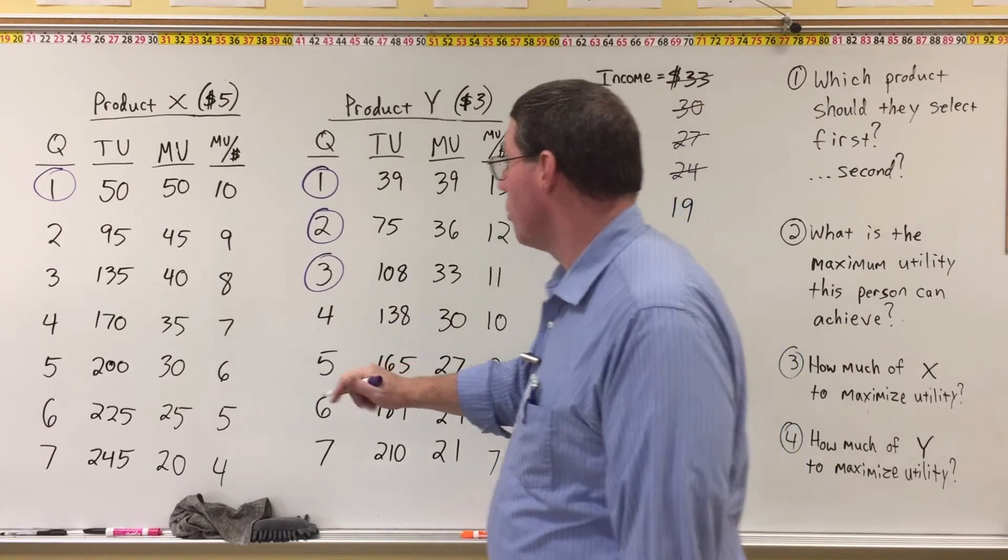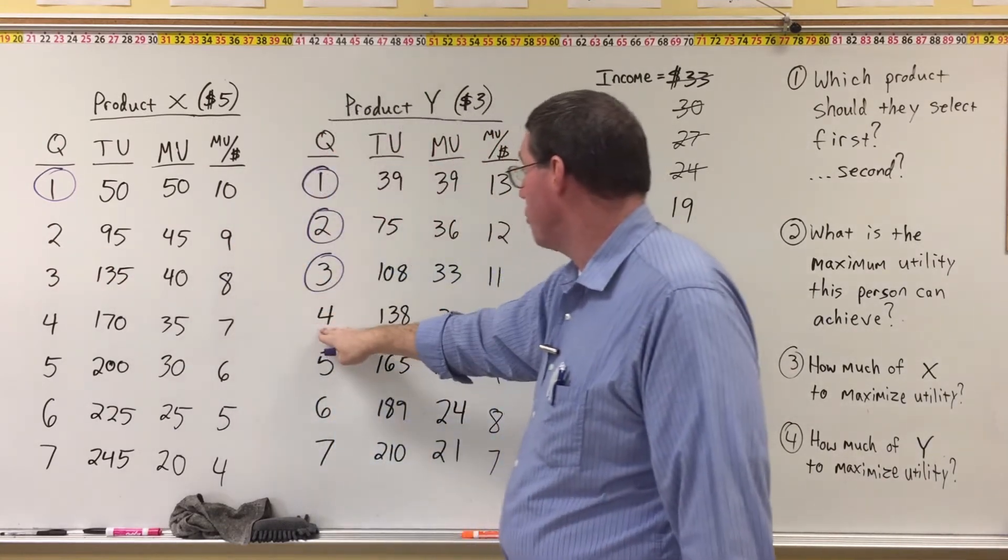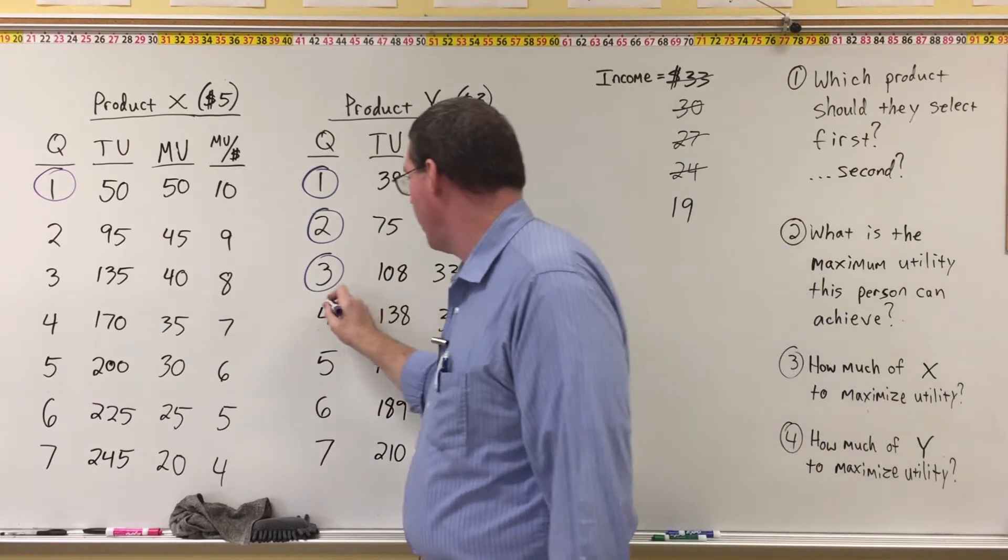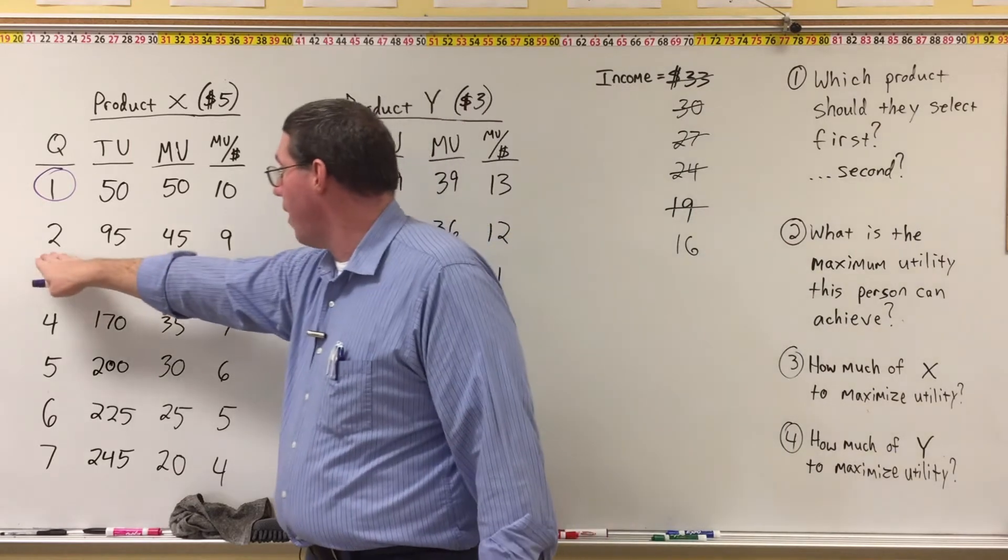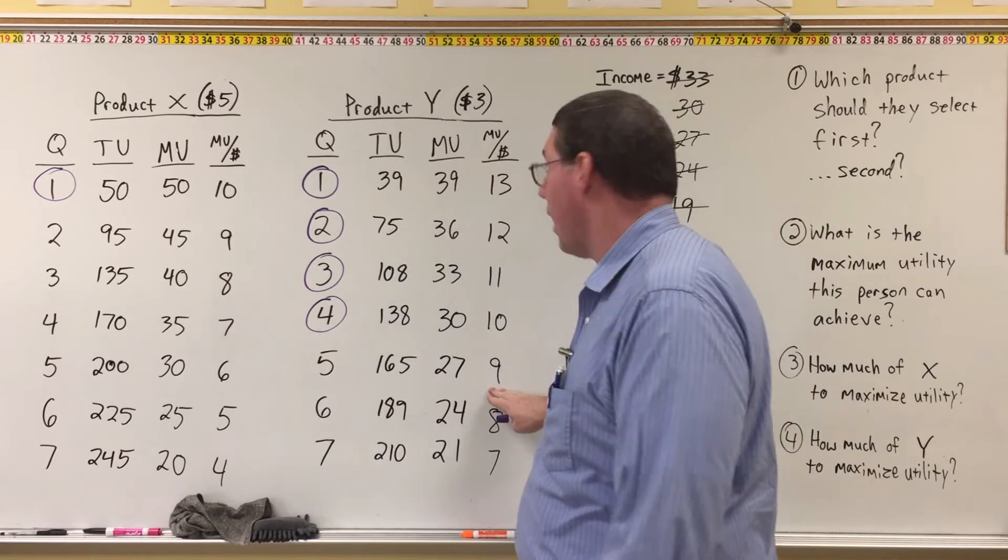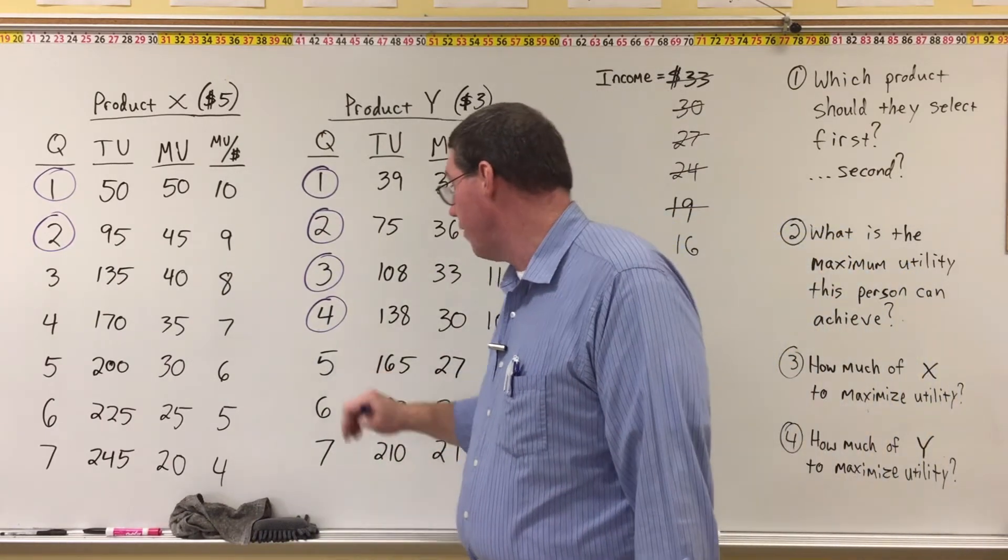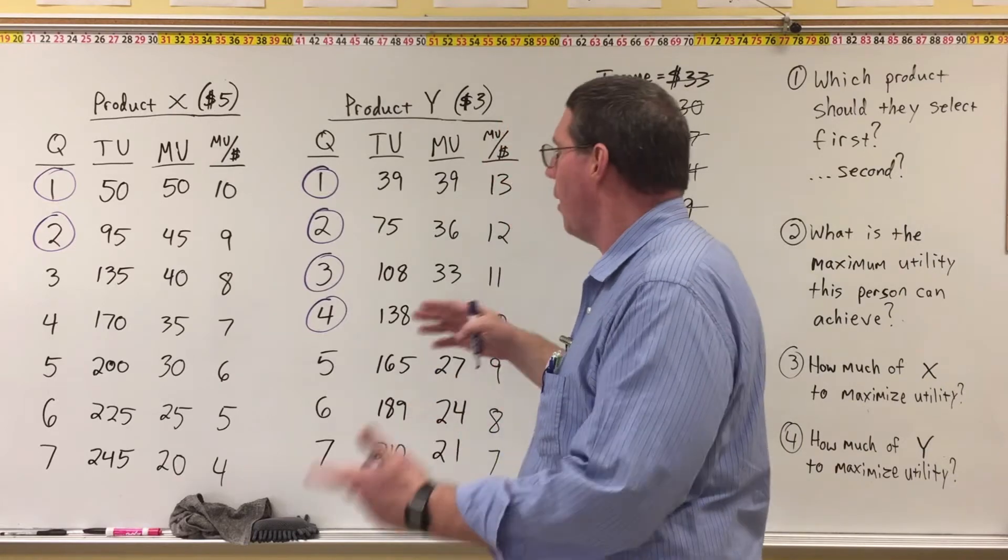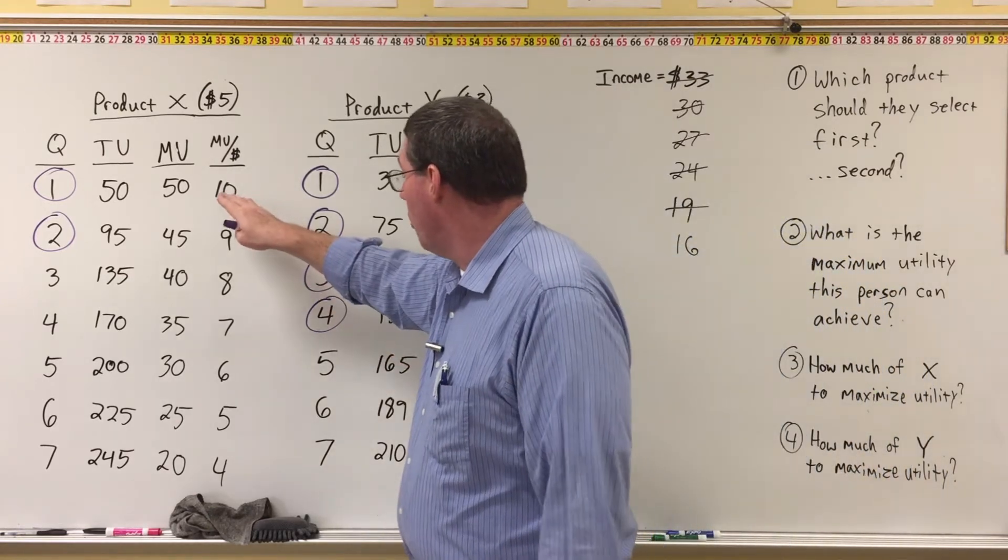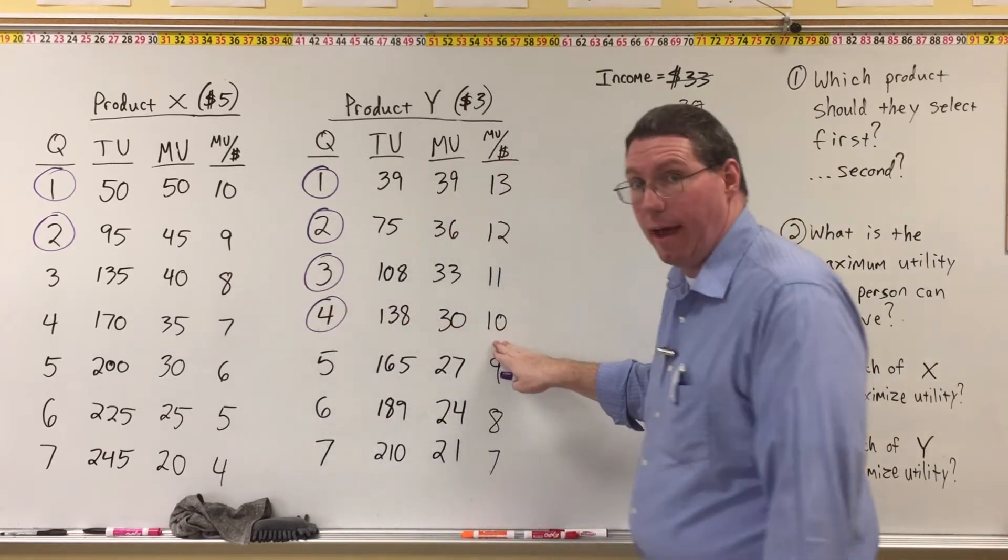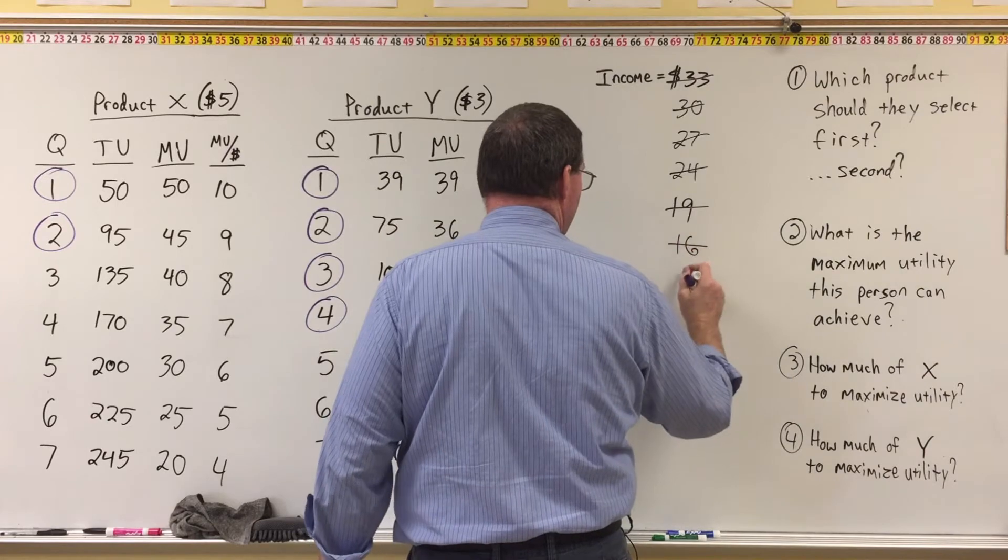All right, so now the next marginal unit, we're going to compare the second unit of X to the fourth unit of Y. The second unit of X gives us 9. The fourth unit of Y gives us 10, so we're going to go with the fourth unit of Y. That's going to cost us $3, so our 19 is going to come down to 16. Now we're going to compare the second unit of X to the fifth unit of Y. 9 versus 9, the same, so for variety, let's go ahead with the second unit of X. Now you don't have to do that for variety. We could just as easily pick the fifth unit of Y, but I'm just thinking myself, I would want to mix it up. But you don't have to mix it up. You could just stick with, but we did have to on the one unit. When 10 here was higher than 9 here, we had to pick the 10. Had to happen, okay? All right, so we're picking one unit of X, and so that costs $5, so our 16 is going to become an 11.